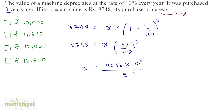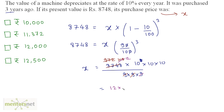We write 9 cubed as 9 times 9 times 9 and 10 cubed as 10 times 10 times 10. Dividing 8,748 by 9 gives 972; divided by 9 again gives 108; divided by 9 once more gives 12. So this equals 12 times 10 times 10 times 10, which is 12,000. So the answer is option C.